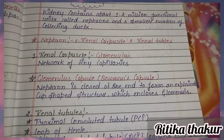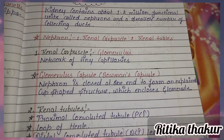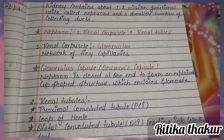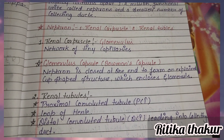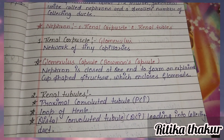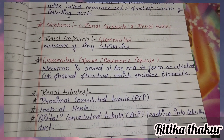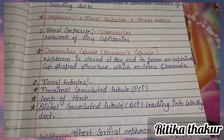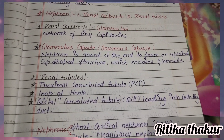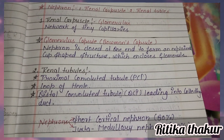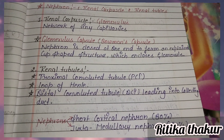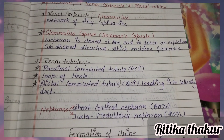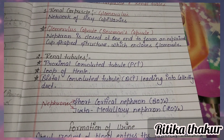The glomerulus is enclosed by the Bowman's capsule. The nephron is closed at one end to form a cup-shaped structure which encloses the glomerulus. The renal tubules consist of the proximal convoluted tubule (PCT), the loop of Henle, and the distal convoluted tubule (DCT) leading into the collecting duct.